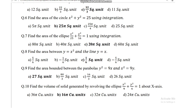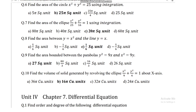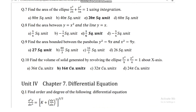Question number 8: find the area between y = x squared and the line y = x. It is 1 by 6 square units. Question number 9: find the area bounded between the parabolas y squared = 9x and x squared = 9y. The answer is 27 square units. Question number 10: find the volume of solid generated by revolving the ellipse x squared by 9 plus y squared by 4 = 1 about the x-axis. The volume is 16 pi cubic units.